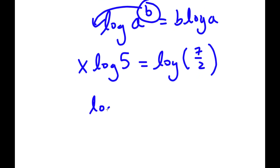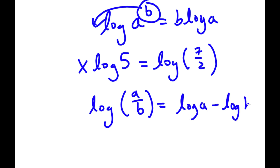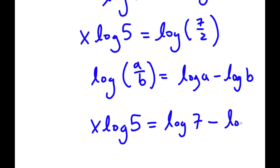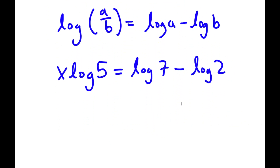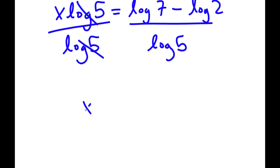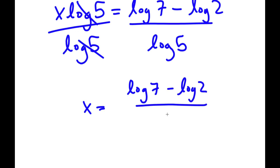Now if I have something in the form log a over b, this is equal to log a minus log b. So log 7 over 2 is going to equal log 7 minus log 2. Now I'm going to divide both sides by log 5, so these two cancel out and I get x is equal to log 7 minus log 2, all over log 5.